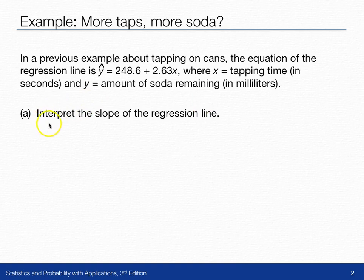And so we're going to interpret what that slope of the line means. Now there are two numbers here. There's the 248.6 and there's the 2.63. One of those is the slope, that's this. The other number is the y-intercept and we'll talk about that one later.